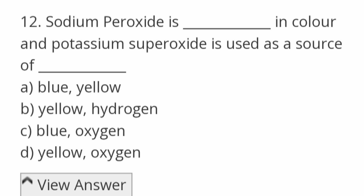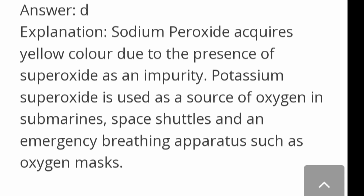Sodium peroxide is dash in color and potassium superoxide is used as a source of dash. Options: blue and yellow, yellow hydrogen, blue oxygen, yellow oxygen. Answer: yellow oxygen. Sodium peroxide occurs in yellow color due to the presence of superoxide as an impurity. Potassium superoxide is used as a source of oxygen in submarines, space shuttles, and emergency breathing apparatus such as oxygen masks.